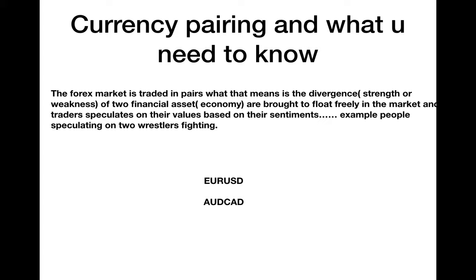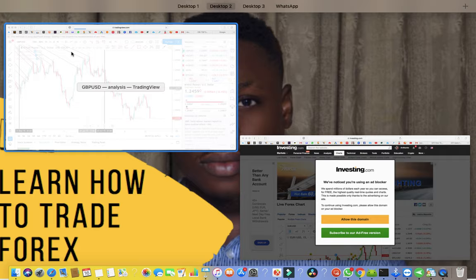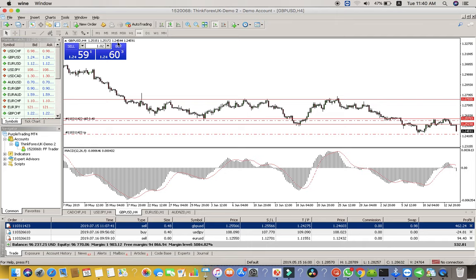Another way to understand forex is to imagine two wrestlers fighting — for example, John Cena versus Ryback. If this pair is EUR/USD and John Cena is EUR while Ryback is USD, whenever John Cena is winning you know the market should be going up because EUR is doing better than USD. Whenever USD is winning, the chart will start going down.